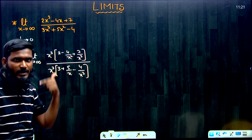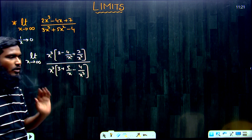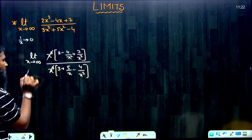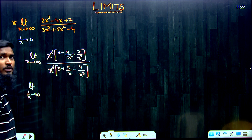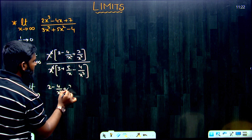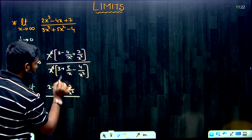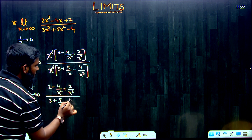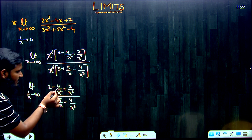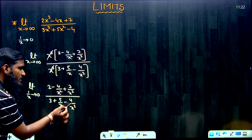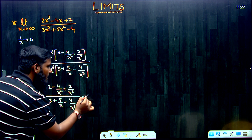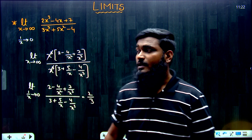After cancellation, we have: (2 - 4/x + 7/x³) divided by (3 + 5/x - 4/x³). Since x tends to infinity, 1/x tends to 0. Wherever we are having a 1/x form, we substitute 0. All those terms become 0, so the answer is 2/3.